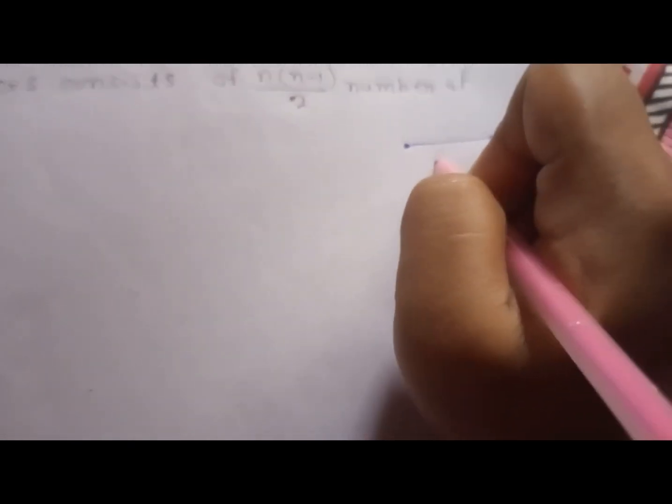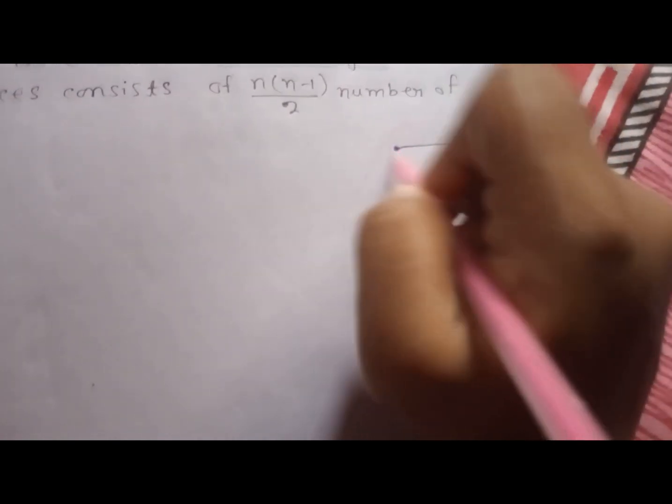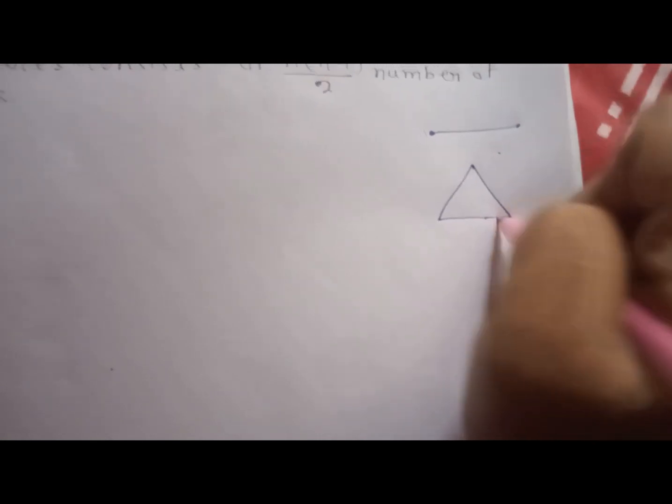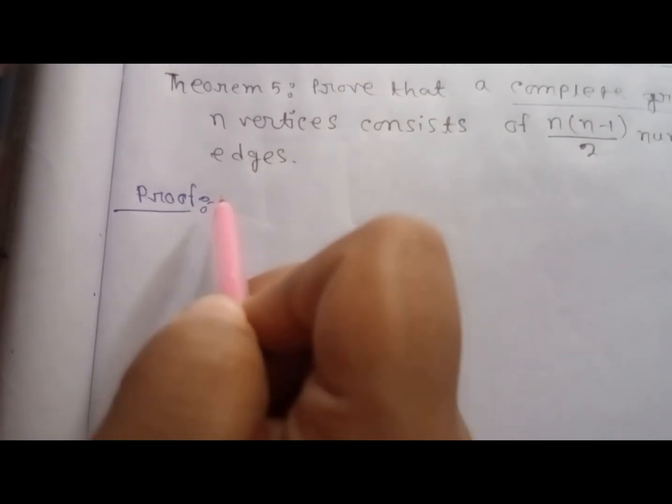Example: So this is a complete graph. Or take another example, this is a complete graph. Proof: Since the graph is complete...